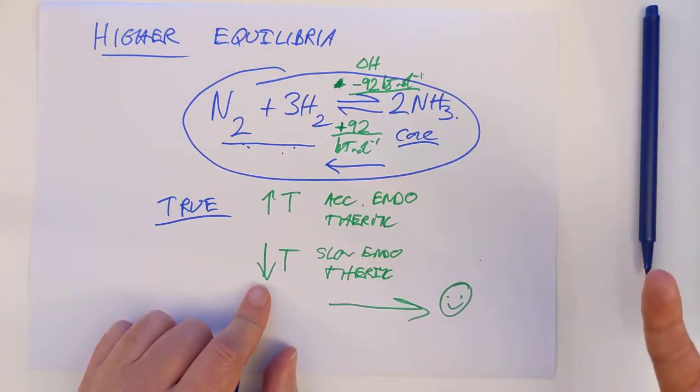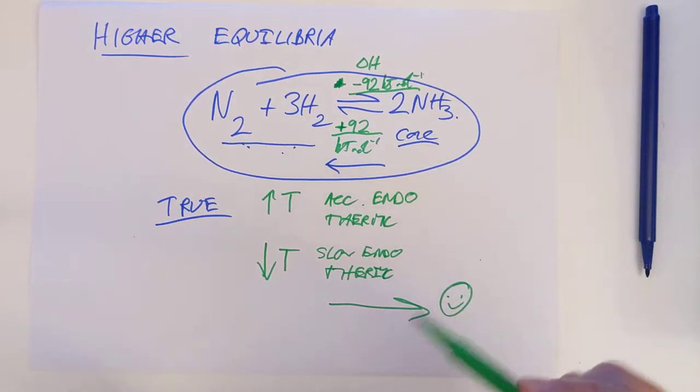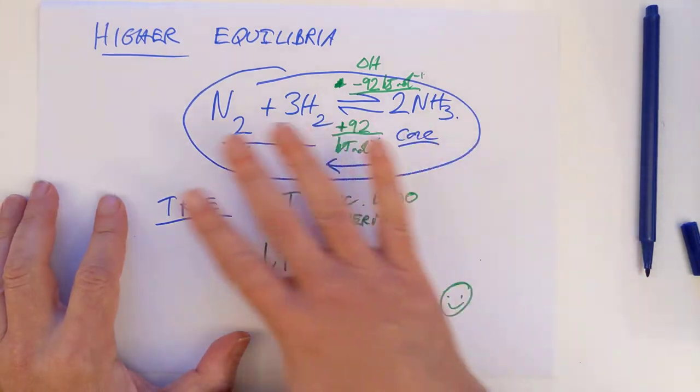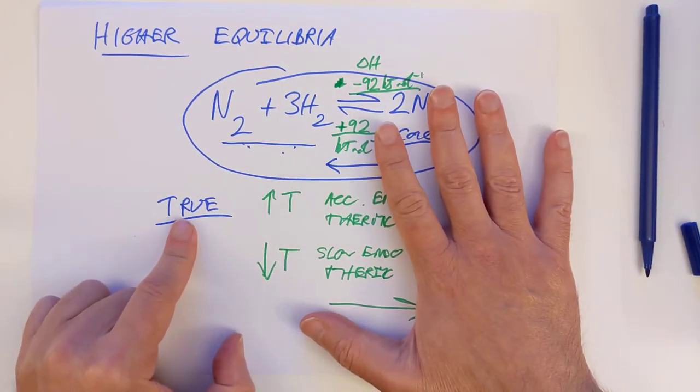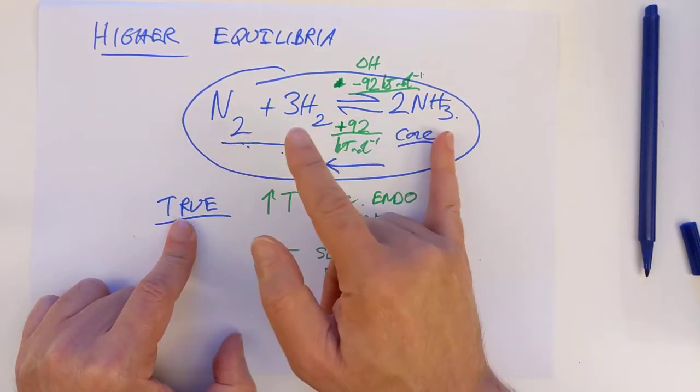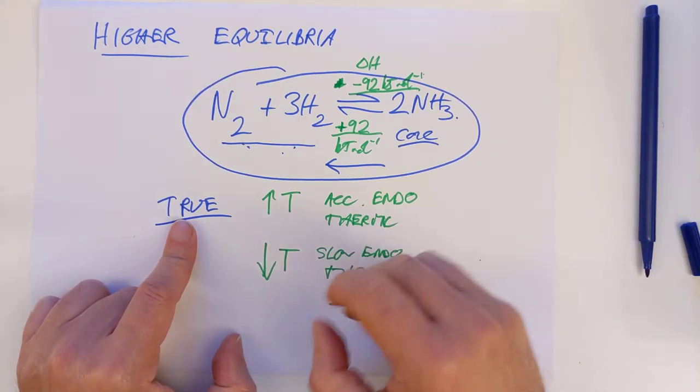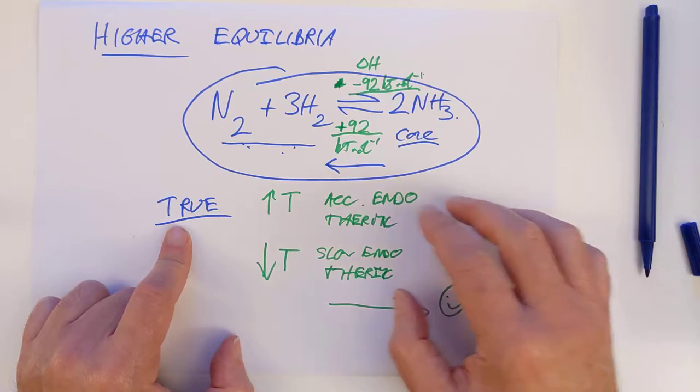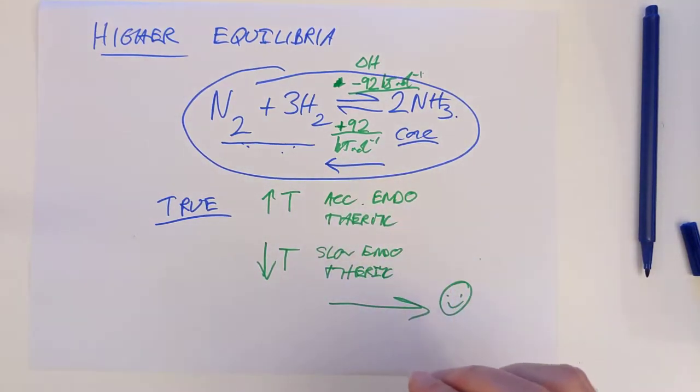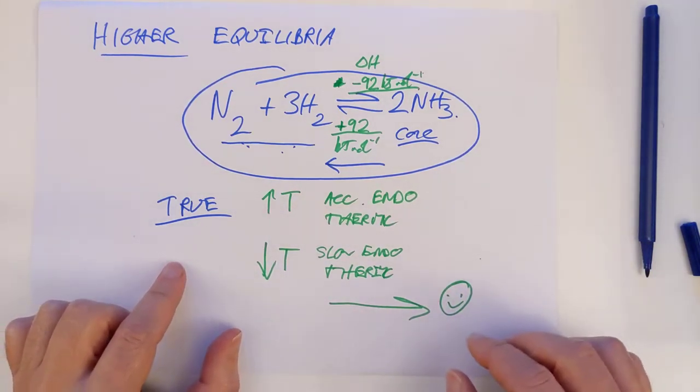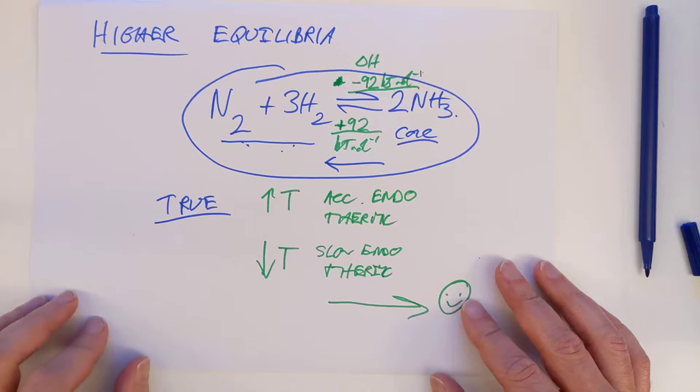Which is why the Haber process is only run about 300 Celsius, which is relatively cold for chemistry. And the converse statement would be true as well. If you drop the temperature, then you will slow the endothermic reaction. So in this case, if you reduce the temperature, you will slow the endothermic, which means the exothermic will continue to run and push the equilibrium to the right.